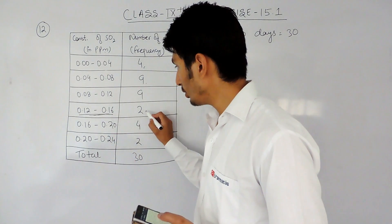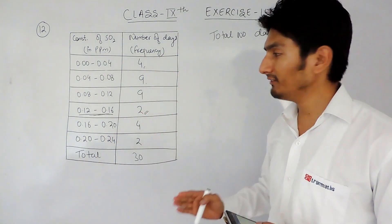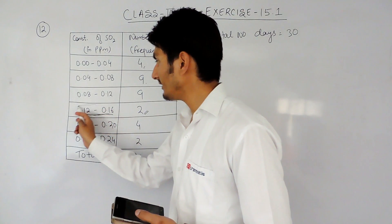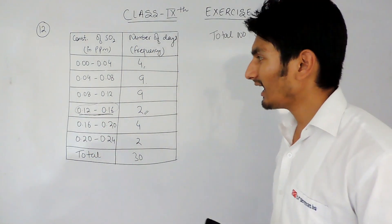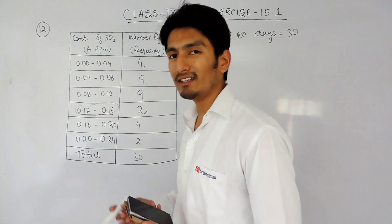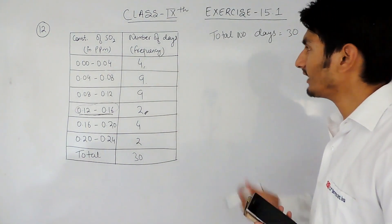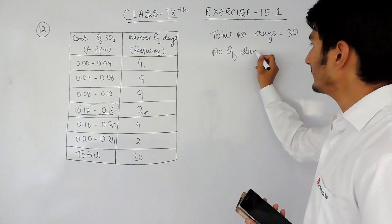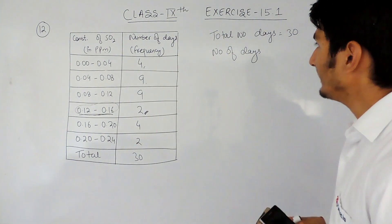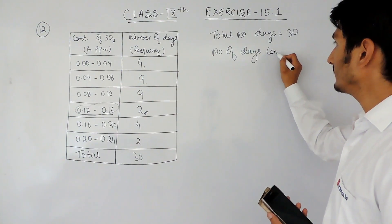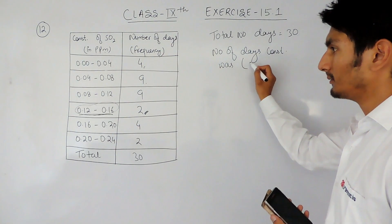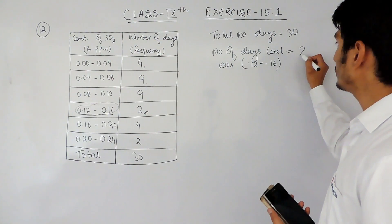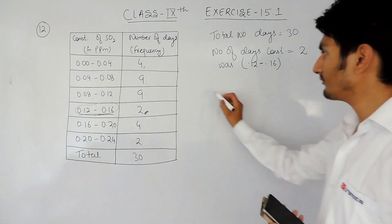We have to find the probability for this interval, so this is the number of trials in which this event has occurred. The event is that the concentration should be between 0.12 to 0.16. In other words, this is the number of days where the concentration was between 0.12 to 0.16 — and in this case there are 2 days.